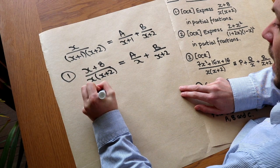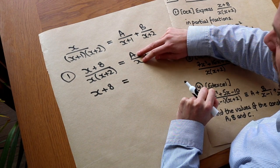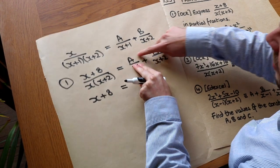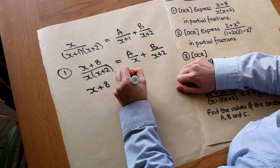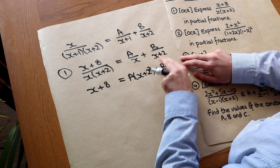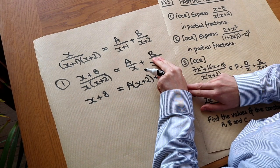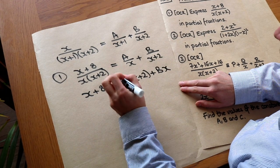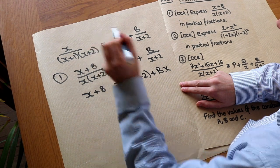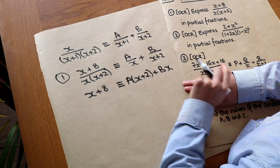So the left side just becomes x+8 because we've multiplied through by the whole denominator. Now multiplying this by x and x+2: multiplying by x gets rid of the 'over x' at the bottom, but we still have to multiply by x+2, so it becomes A(x+2). And then plus B: multiplying by x+2 gets rid of the 'over x+2', but we also have to multiply by x, so it's Bx. Actually this is not an equality — it's an identity, so we should use the triple equals sign. That means it has to always be equal for whatever value of x we use.